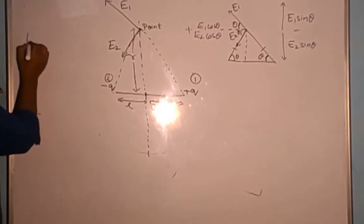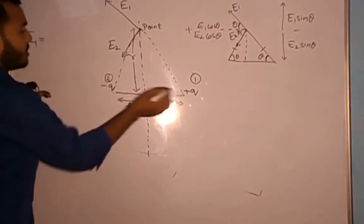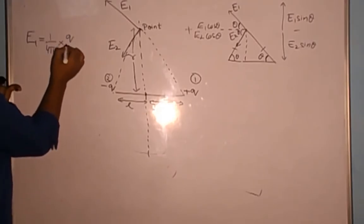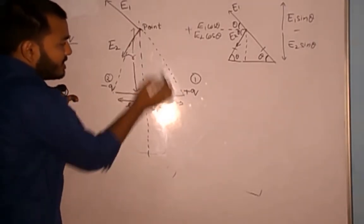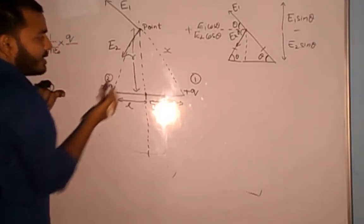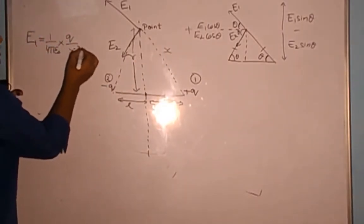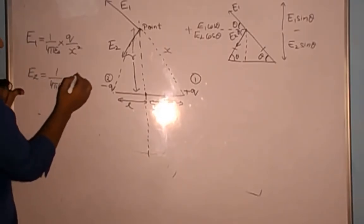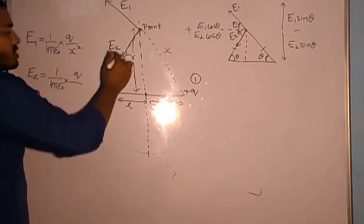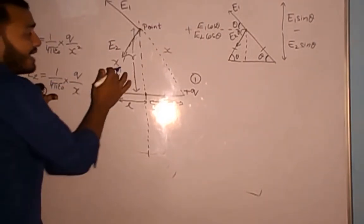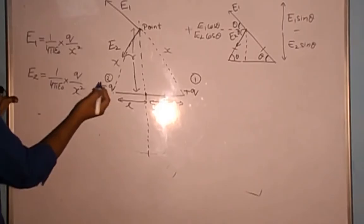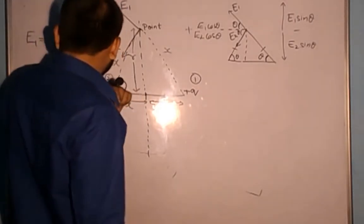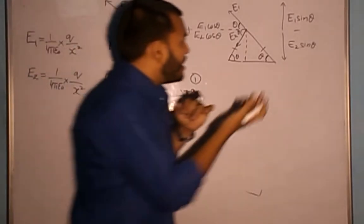Now let's find E1 and E2. E1 is the electric field due to charge +q: it equals (1/4πε₀) × q / x², where x is the distance from the charge to the point. E2 is the electric field due to charge -q: it equals (1/4πε₀) × q / x², using the same distance x because both charges are equidistant from the point. So E1 equals E2.